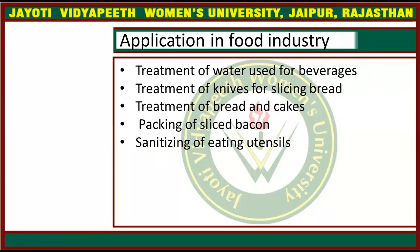The fourth application is the packing of sliced bacon. Bacon is a type of non-vegetarian food — pork meat. The meat is called bacon, and it is sliced for packaging. The packaging material is treated using the radiation method. The last application is sanitizing of eating utensils. For utensils used for eating purposes, radiation is also used to sanitize them.